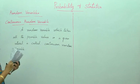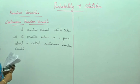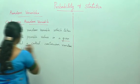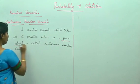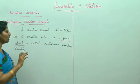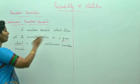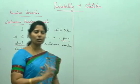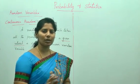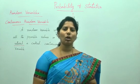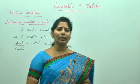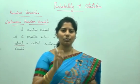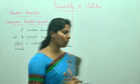In continuous random variable, the phrase 'in a given interval' is very, very important. Usually students will write 'a random variable which takes all the possible values is called the continuous random variable.' That is wrong. You should write it as 'in a given interval,' which is very, very important.